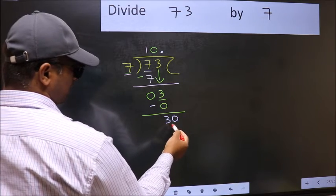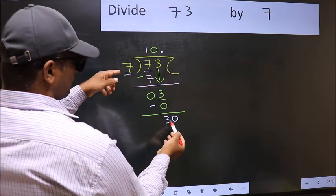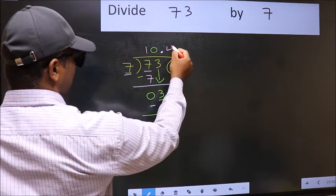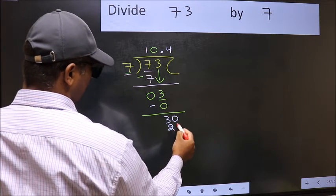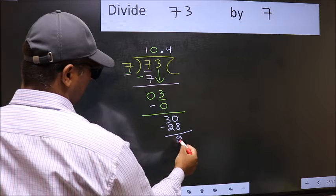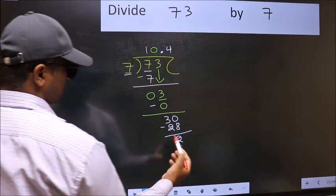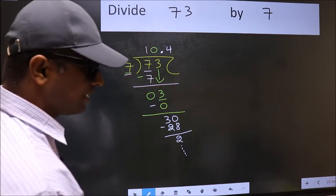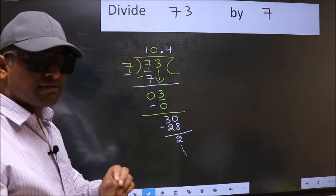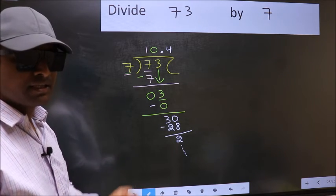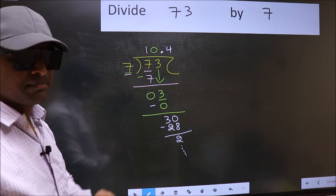So, 30. A number close to 30 in the 7 table is 7 times 4 is 28. Now you subtract, you get 2, and continue the division. I am not doing that. Did you understand where the mistake happens? You should not make that mistake.